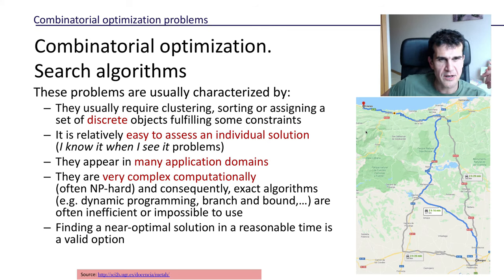These problems are usually characterized by a set of features or properties. They usually require either clustering or sorting or assigning a set of discrete objects, and usually we have to take into account certain constraints. For instance, in the hospital problem, one individual cannot work two night shifts in a row. These are problems where it is very difficult to find the best solution.